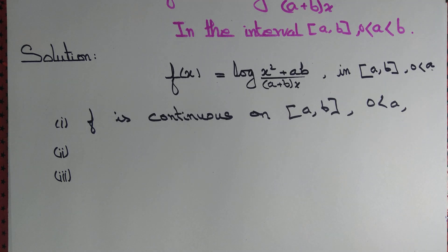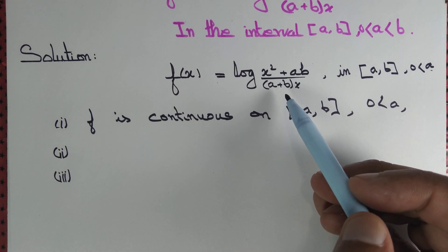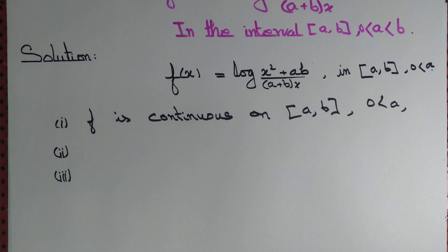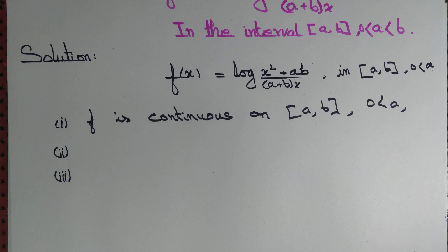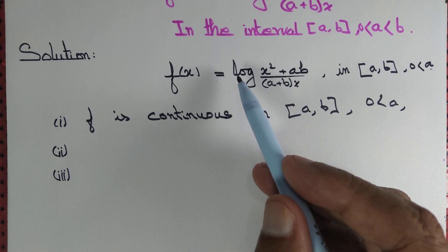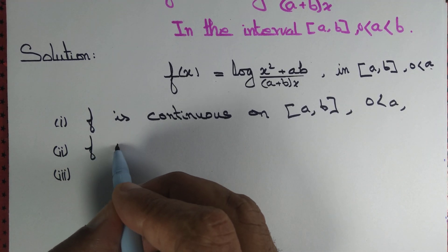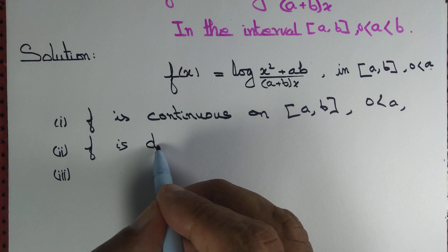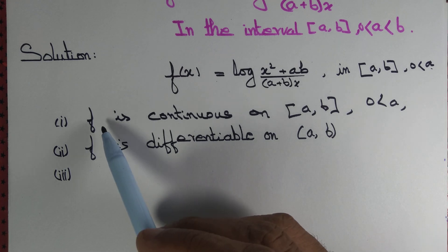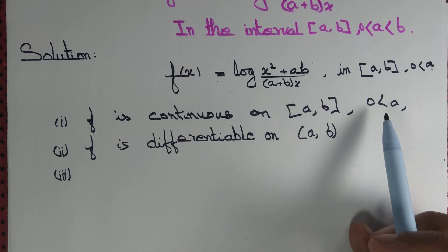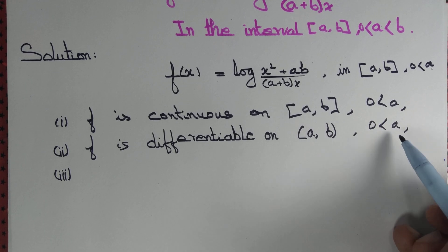Similarly, f is differentiable because polynomial functions are differentiable, and a quotient of polynomials is differentiable provided the denominator is not zero. The composite of two differentiable functions is again differentiable, and log is differentiable. So f is differentiable on the open interval (a, b), with a > 0.